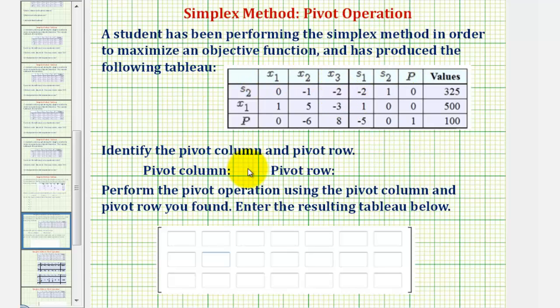We're asked to identify the pivot column and pivot row, which will allow us to find the pivot, which is the entry that's in both the pivot column and the pivot row. Then we're asked to perform the pivot operation and record the result below.